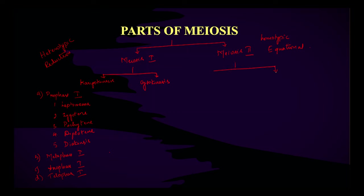In meiosis 2, the chromatids get separated. It also has two parts: karyokinesis and cytokinesis, with prophase 2, metaphase 2, anaphase 2, and telophase 2. We are going to see each one in detail.